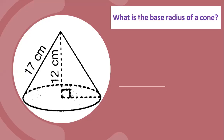What is the base radius of a cone? In the diagrams, we have a 17 cm slant height and 12 cm height.